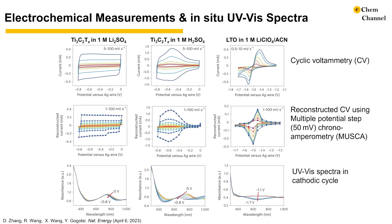Here we show the UV-Vis spectra collected at various potentials in the cathodic cycles. Ti3C2 MXene in sulfuric acid showed more significant shifts of absorption spectra than in lithium sulfate, which makes sense since in acid, Ti3C2 is pseudocapacitive, and in neutral pH electrolytes it uses a double-layer mechanism. LTO in the lithium electrolyte showed an abrupt change in absorption spectra, which indicates a phase transformation. Since the difference between each spectrum contains information about phase transformation and charge storage kinetics, we took the change — or derivative — of the absorbance at specific wavelengths.